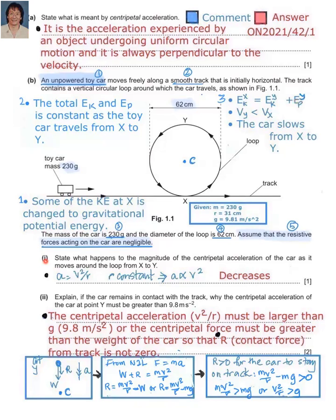In part one, state what happens to the magnitude of the centripetal acceleration as the car moves around the loop from X to Y. We know the velocity decreases from X to Y. To find how acceleration changes, we use the relationship A = V²/R. Since the radius is constant, A is directly proportional to V². So when V decreases, A also decreases. The answer is 'decreases' — one mark.